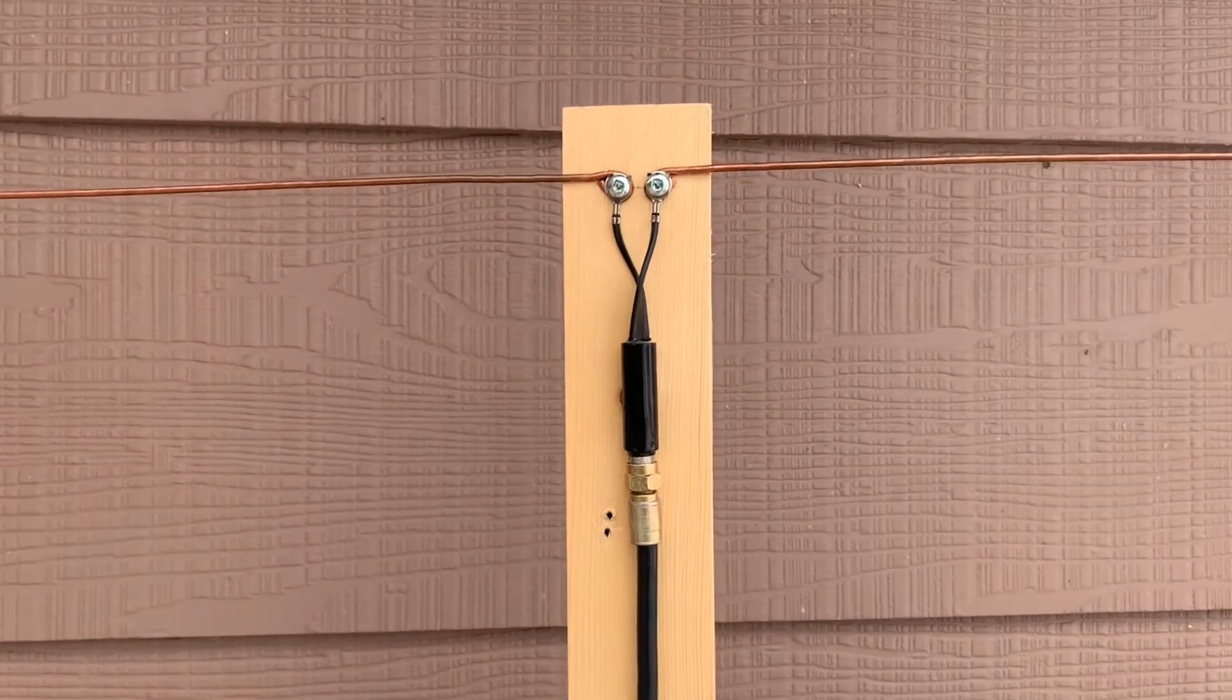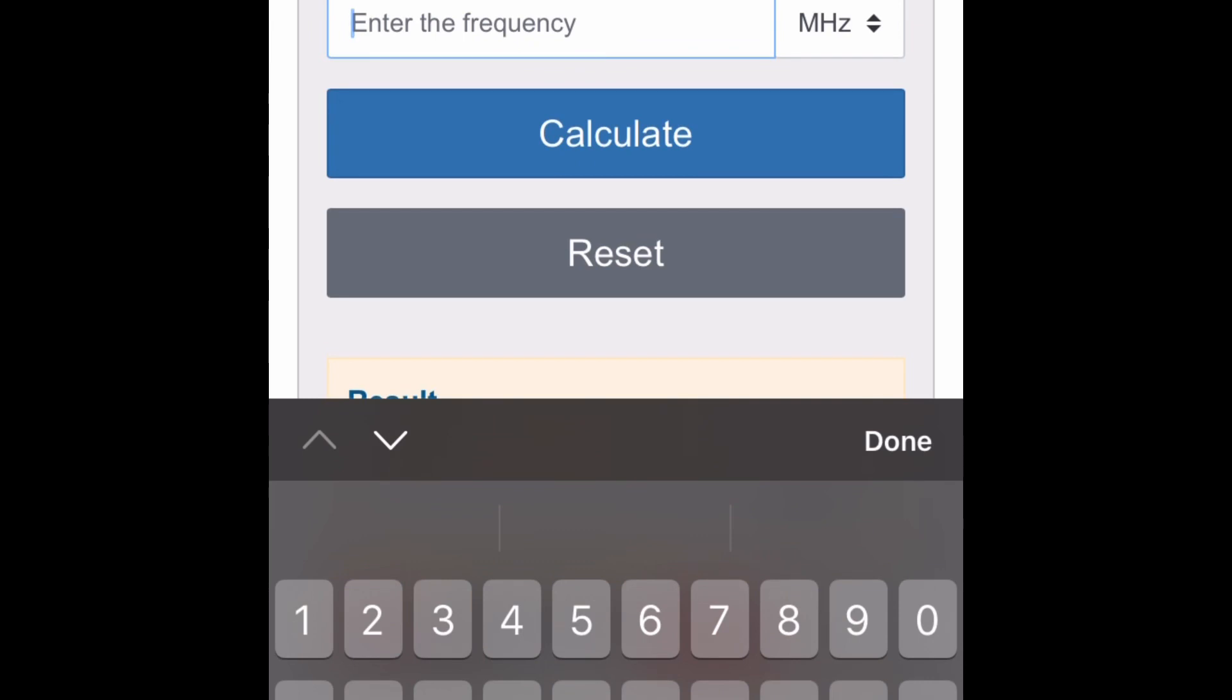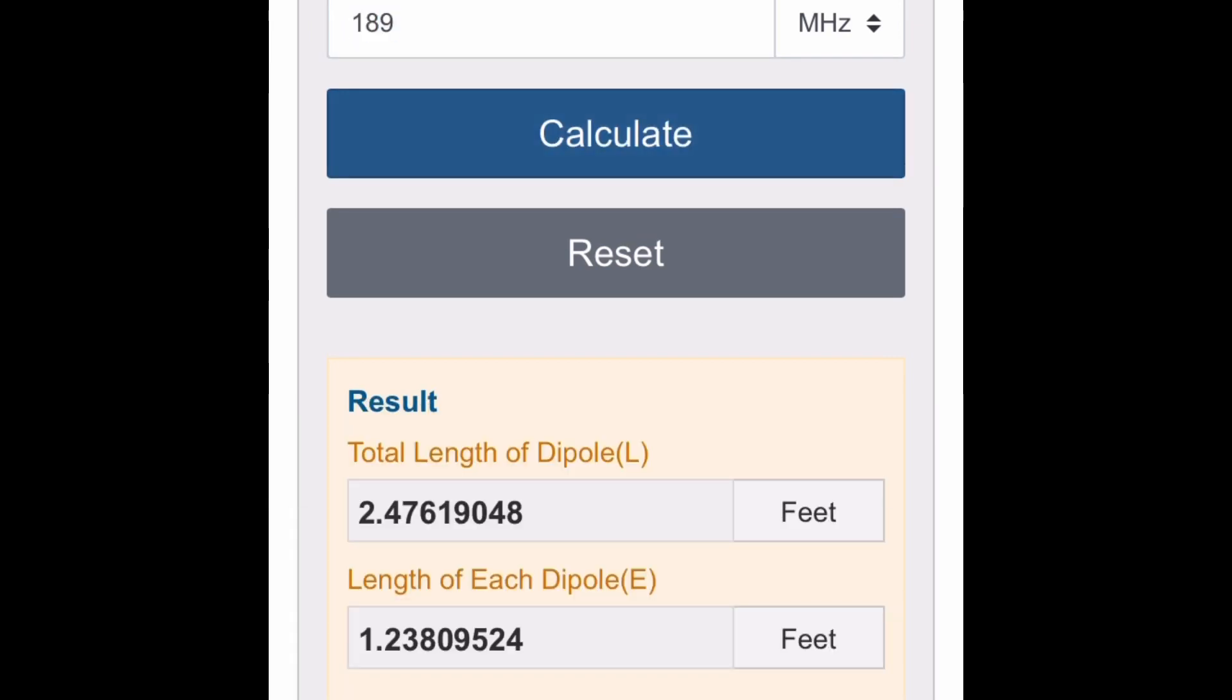On the other hand, sometimes a simple pair of store-bought rabbit ears might get the job done as far as indoor antennas go. Which one is for you? Well, only you know that.